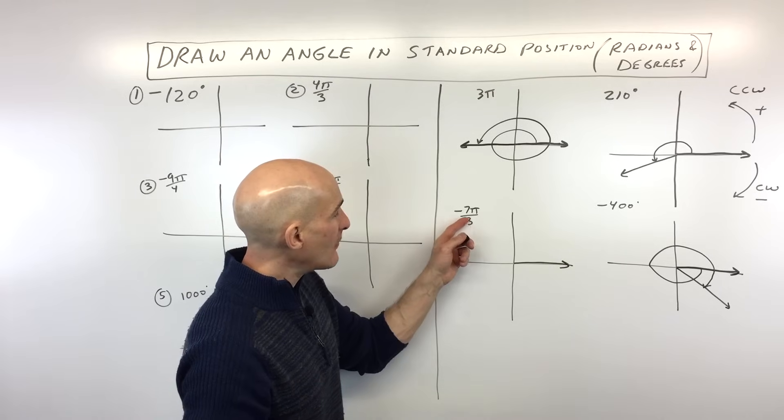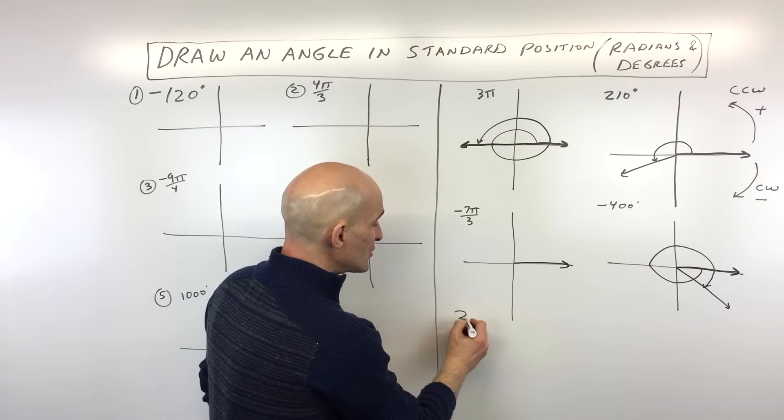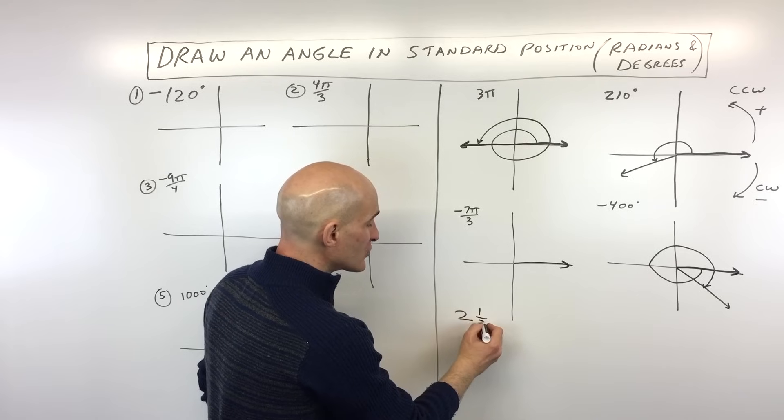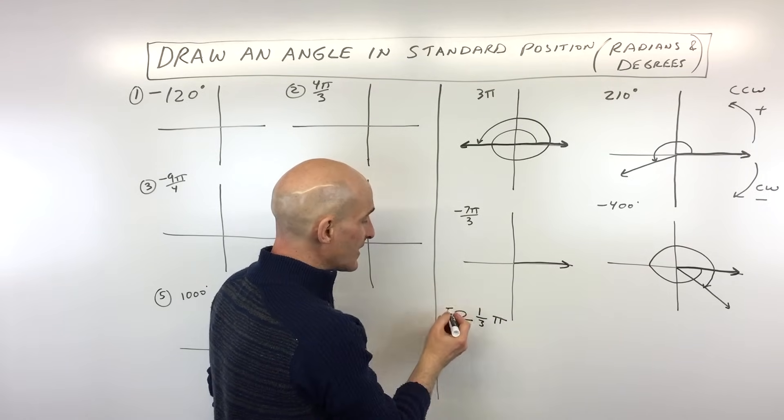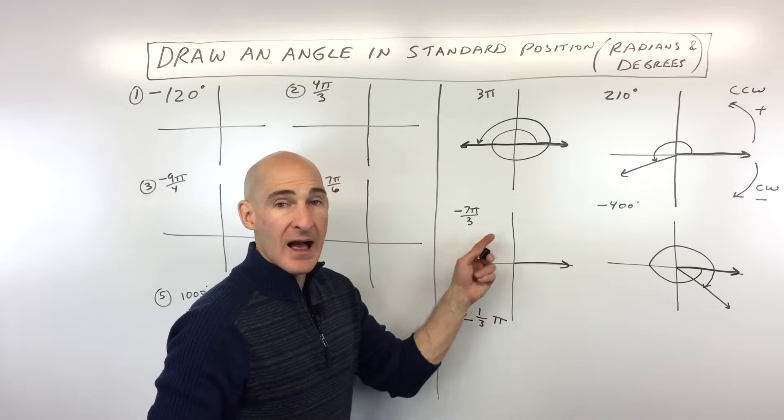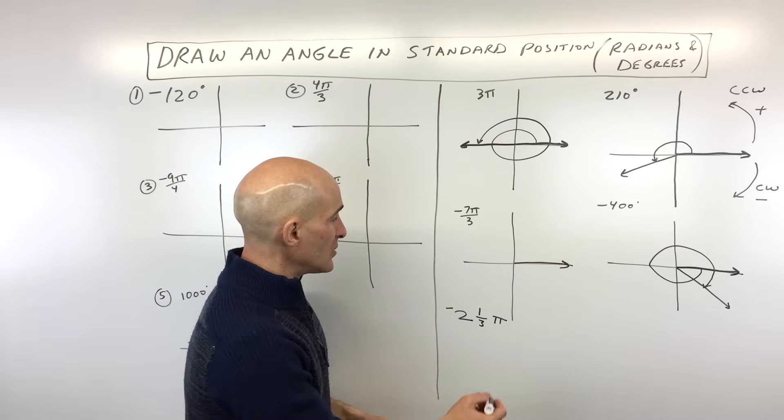So what I mean by that is how many times does 3 go into 7? Well, it goes in 2 times with 1 left over. So this is really like 2 and 1 3rds pi. And you can see it's negative. So that means we're going to be going clockwise. So let's go ahead and do that.